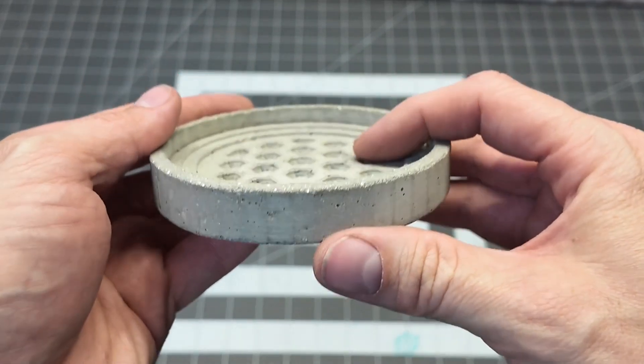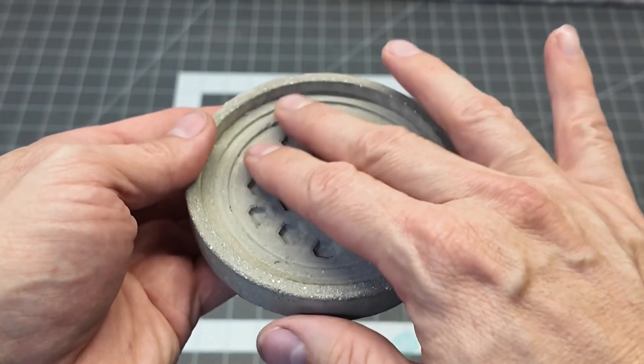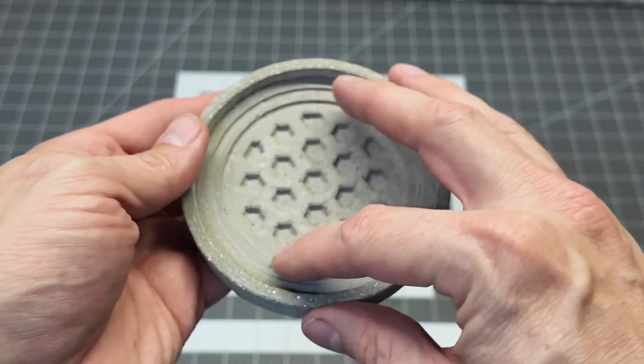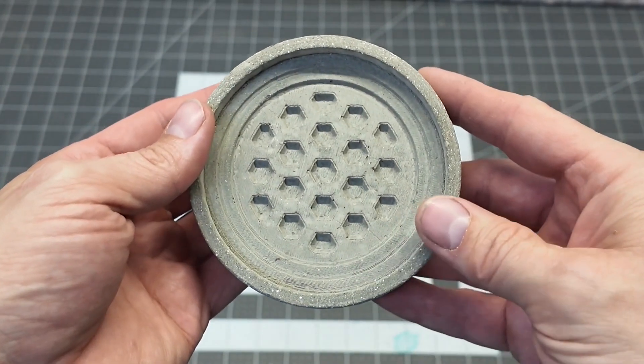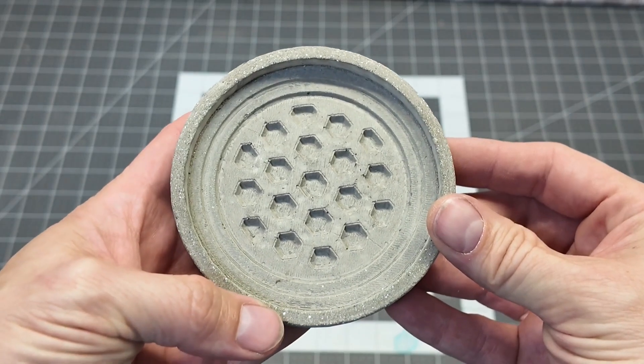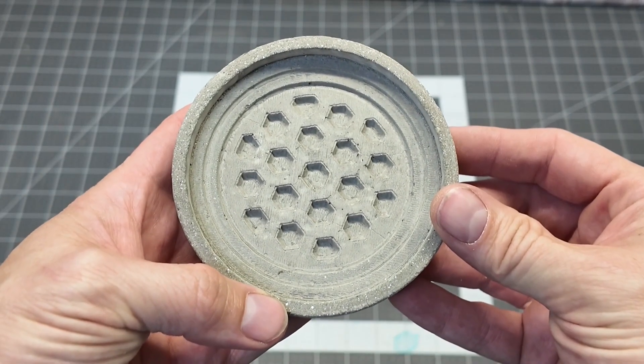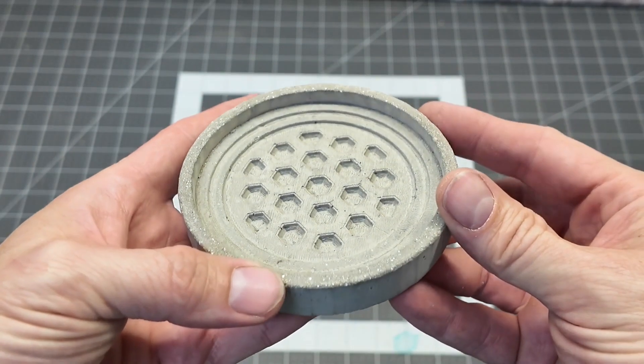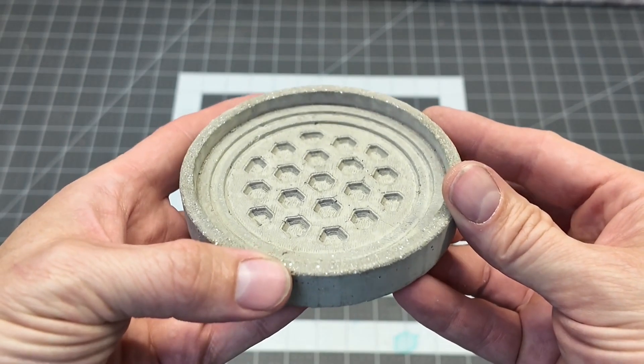Well, hello everyone and welcome to Sawdust and Circuits, where today we're getting our hands dirty, literally, with some concrete casting. That's right, we're going to go full DIY, mixing up some concrete and slapping it into a 3D printed mold.